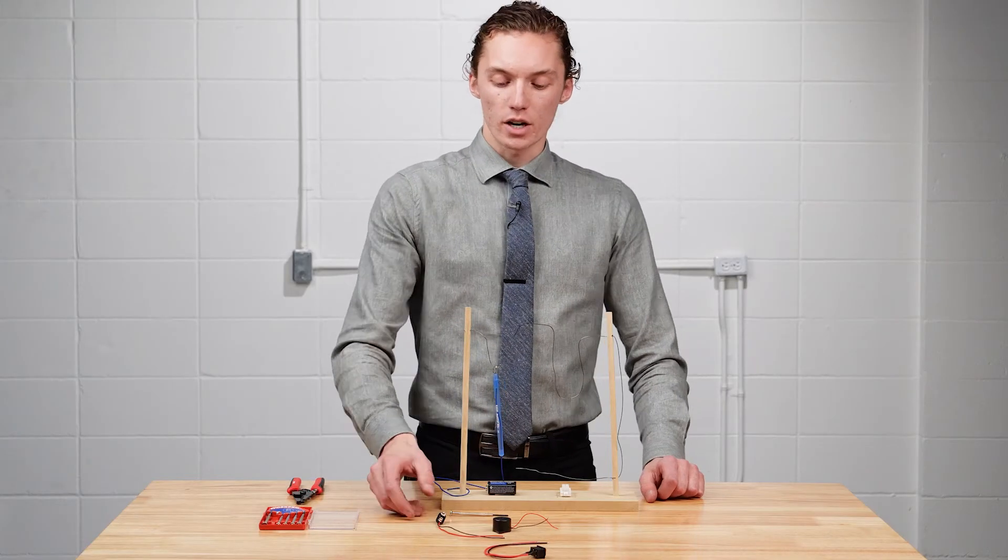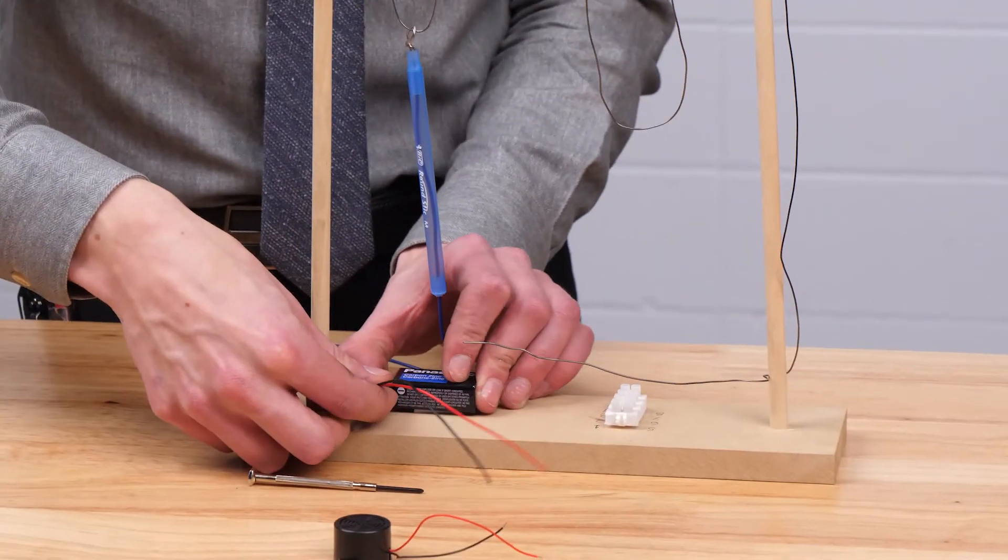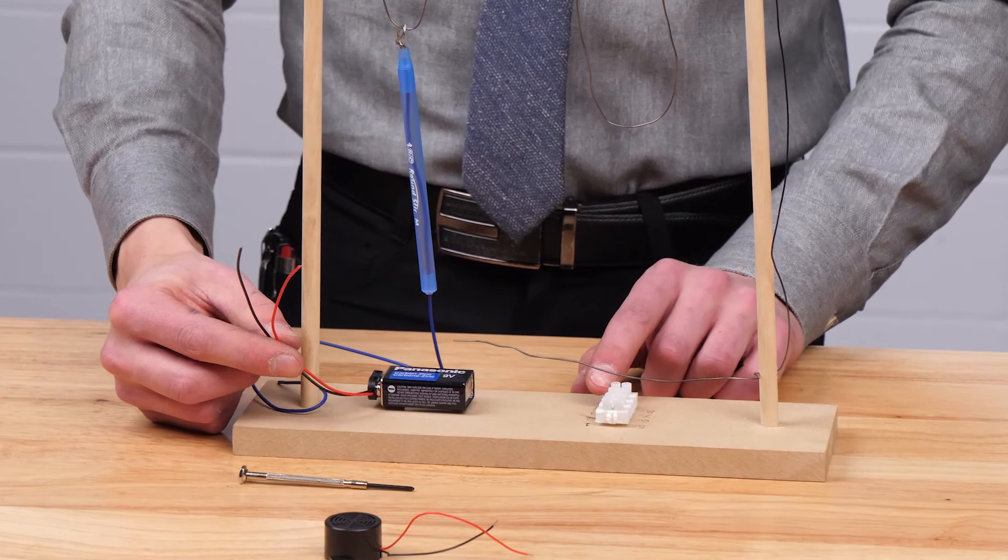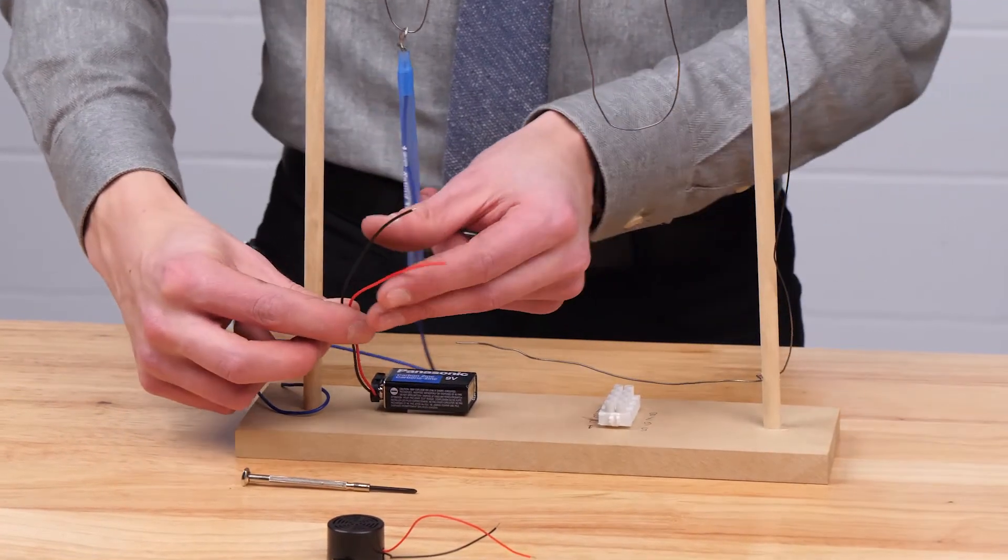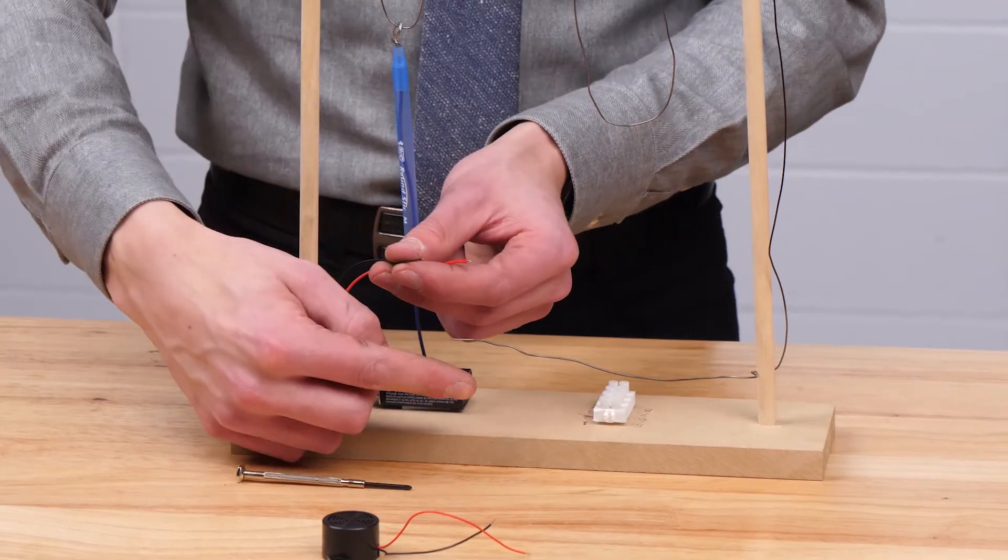Next, we're going to attach our battery lead to the battery like so and begin wiring our connector as per the diagram. Make sure that there is enough wire exposed on the end of each of your lines to make contact with the connector.